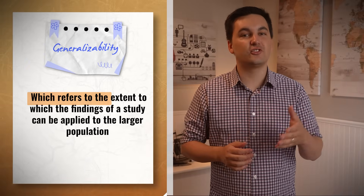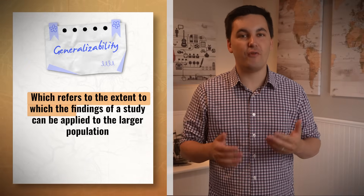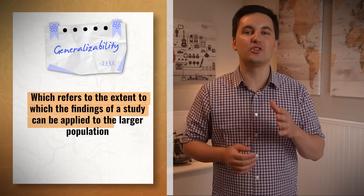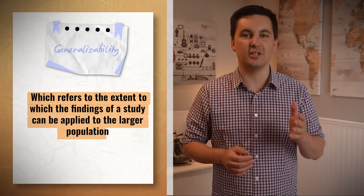One specific form of sampling bias is convenience sampling, where individuals are selected based on their availability. While convenient and easy, it can introduce sampling bias and limit the generalizability of the results — meaning the extent to which the study's findings can be applied to the larger population.